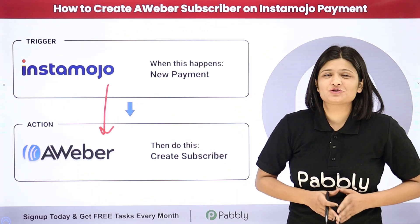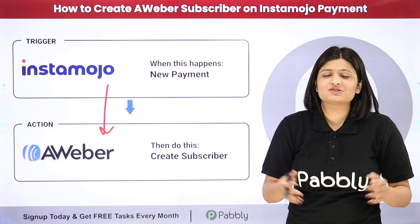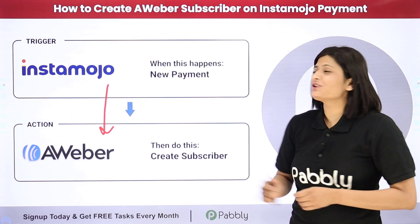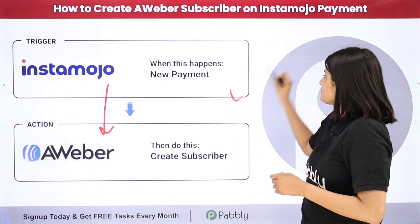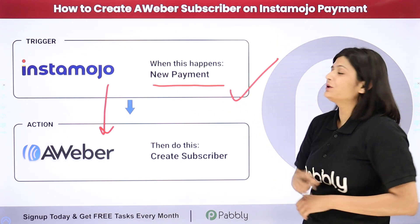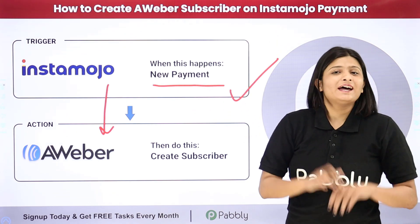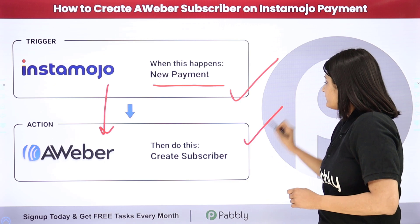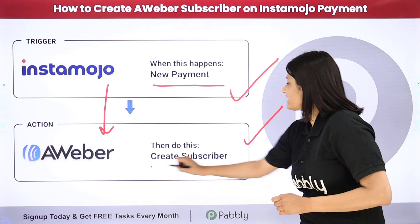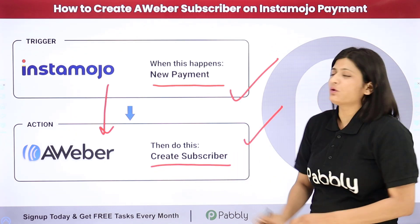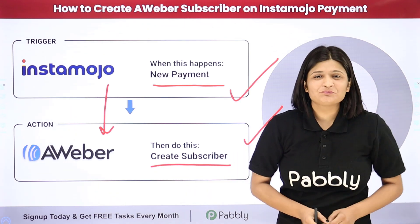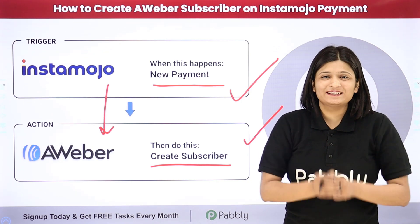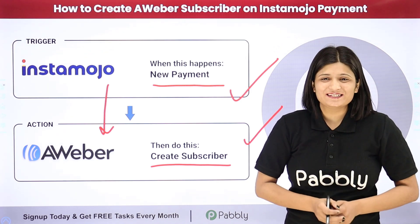Pabbly Connect runs on two principles: Trigger and Action. Here, as my trigger application, I am going to take InstaMojo where the new payment will happen, and then in my action application, I am going to take Aweber where the subscriber will be created automatically. If you want to learn this amazing automation step by step, let me take you all to my screen.